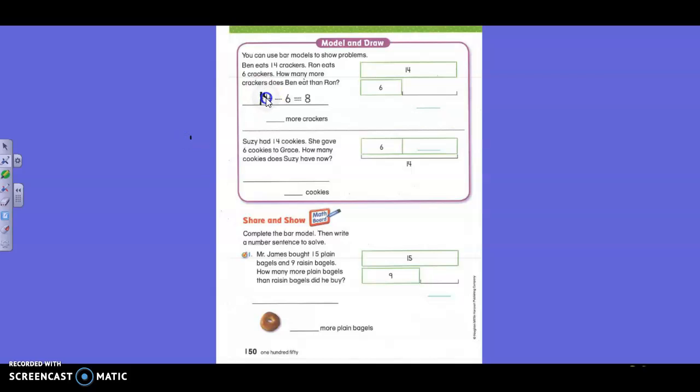So we are going to do what now? Subtract. Subtract. Ben eats fourteen. So Ben eats fourteen. Ron eats six. Fourteen is the whole. It's the bigger number. Ron eats six. Fourteen is the whole. That leaves how much left over? Eight. Eight. Eight more.